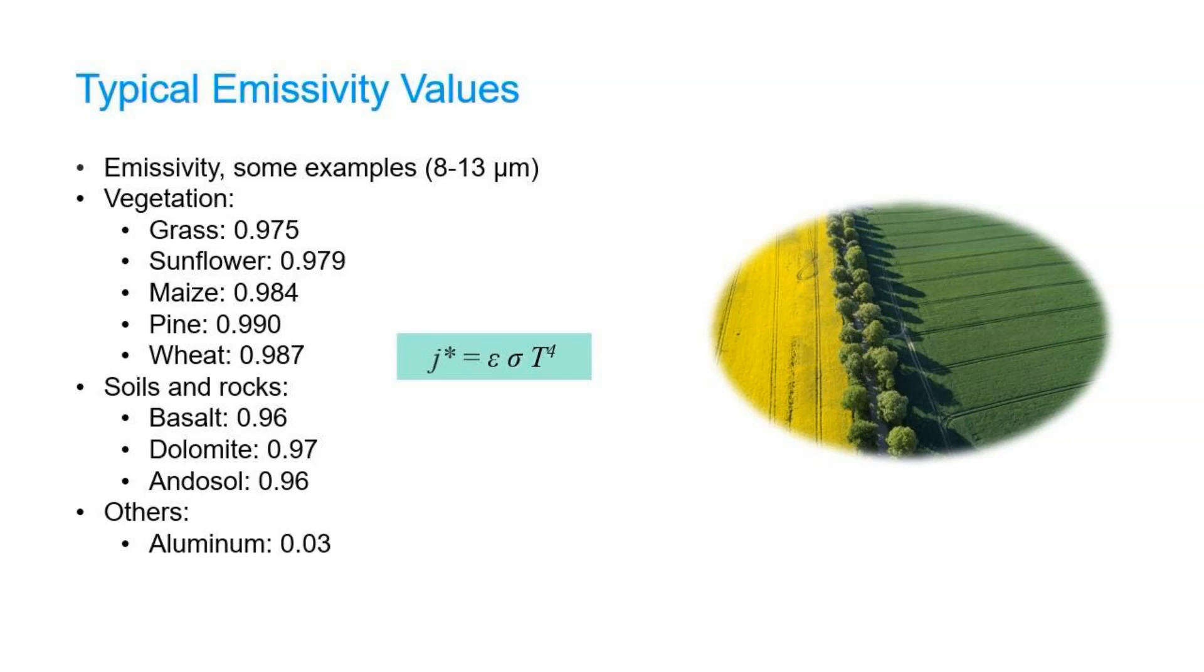We can see that for crops, we often have to look at the third decimal to see the differences. It's very important to have an accurate value of emissivity, because for real objects, we need to modify Stefan Boltzmann's law for energy by multiplying the law by emissivity. And we can see that temperature is to the power of 4, and therefore a little difference in emissivity will have a huge impact on the calculated amount of energy.